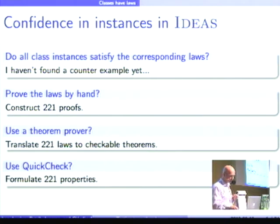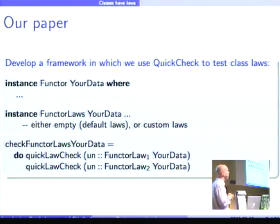Or I can try to use QuickCheck to test the laws. And this is what I did. And what we described in our paper is we developed a framework in which we use QuickCheck to test class laws. And what you can do as a user, suppose you write instance Functor for your data with some definition of fmap. You can then write instance FunctorLaws your data. And you can either leave that an empty instance or you can add some custom laws or an adaptation of the default laws that are there.